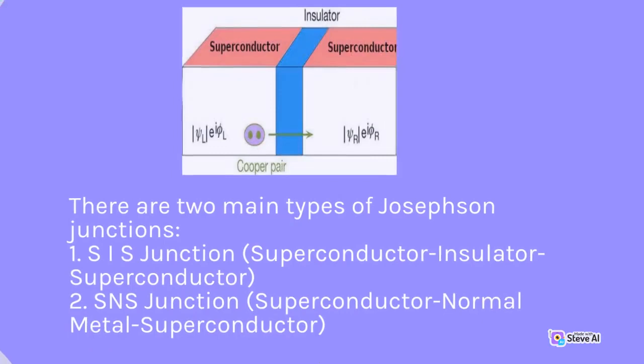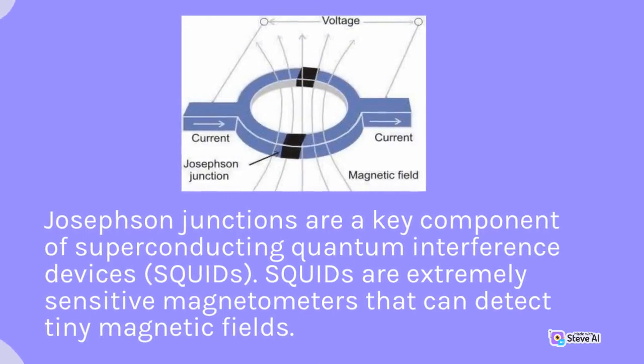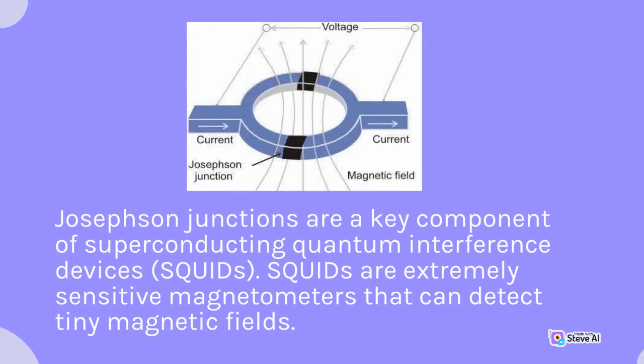There are two main types of Josephson junctions: (1) SIS junction — Superconductor-Insulator-Superconductor, and (2) SNS junction — Superconductor-Normal Metal-Superconductor. Josephson junctions are a key component of superconducting quantum interference devices, SQUIDs. SQUIDs are extremely sensitive magnetometers that can detect tiny magnetic fields.